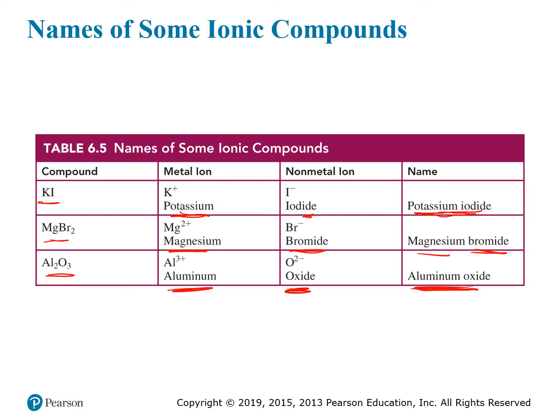One thing to notice is that none of these names included any reference to the numbers in the chemical formula. The idea is that just by naming the ions, you can figure out the formula by assuming charge neutrality. You know the charge on each ion based on their position on the periodic table, and with simple arithmetic you can figure out how many of each ion you need to achieve a neutral compound.